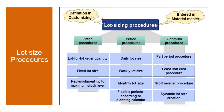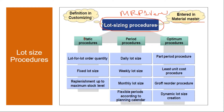The lot sizing procedure is entered in the material master in the MRP1 view. We have three types of lot sizing procedures: static, periodic, and optimizing procedures. We will discuss static and periodic ones.